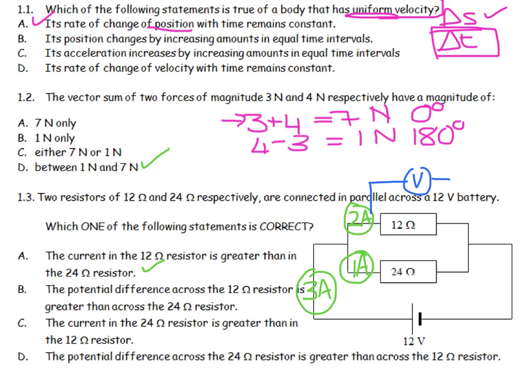The potential difference across these two would be exactly the same. You will remember that the potential difference across one branch is exactly the same as the potential difference across the next branch, which is the same as the potential difference across the entire parallel network. The current in the 24 ohm resistor is greater than the 12 ohm resistor. That is not true, it's the other way around. And the potential difference across the 24 ohm resistor is greater. We've just decided that those are the same. So the only right answer is A.